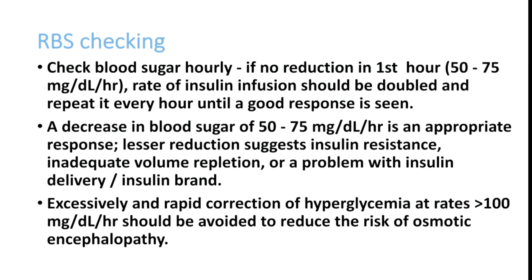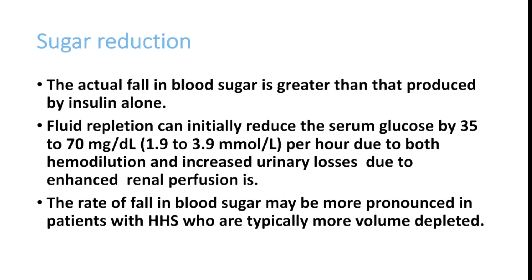When we start fluid, sugars begin coming down. Adding insulin causes a further drop. The expected correction during fluid and insulin therapy is 50 to 75 mg/dL per hour. Fluid repletion alone can initially reduce blood sugar by 35 to 70 mg/dL per hour due to hemodilution and increased urinary loss from enhanced renal perfusion. This fall may be more pronounced in HHS patients, who are typically more volume depleted. Monitor closely so the drop does not exceed 75 mg/dL per hour.